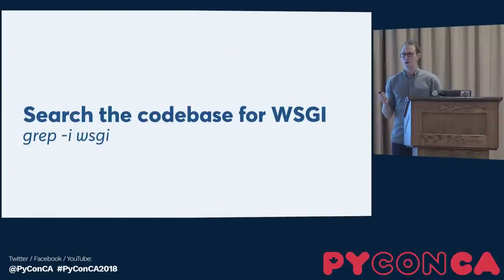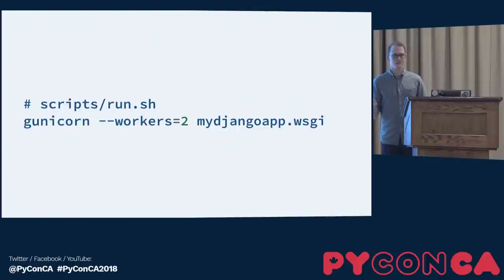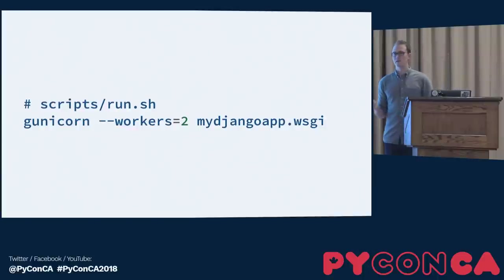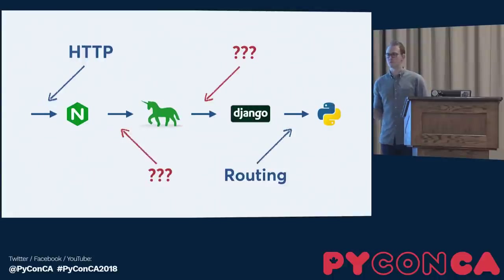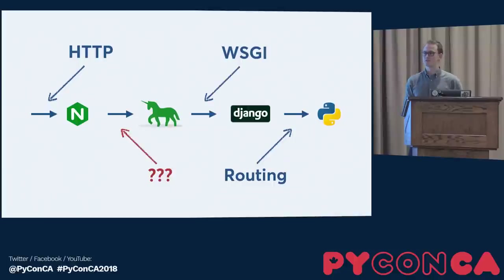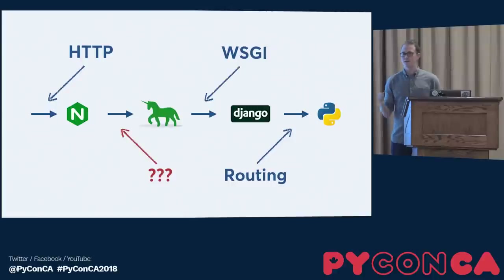The simple approach is to grep for what you know — search through the codebase and see where else WSGI is referenced. I found a run script invoking Gunicorn, setting some flags, and pointing at the mydjango.wsgi module. This was really nice because it started to fill in some blanks. But I was out of ways to search the codebase; that was the last thing referencing WSGI, so it was time to take the search to the internet.